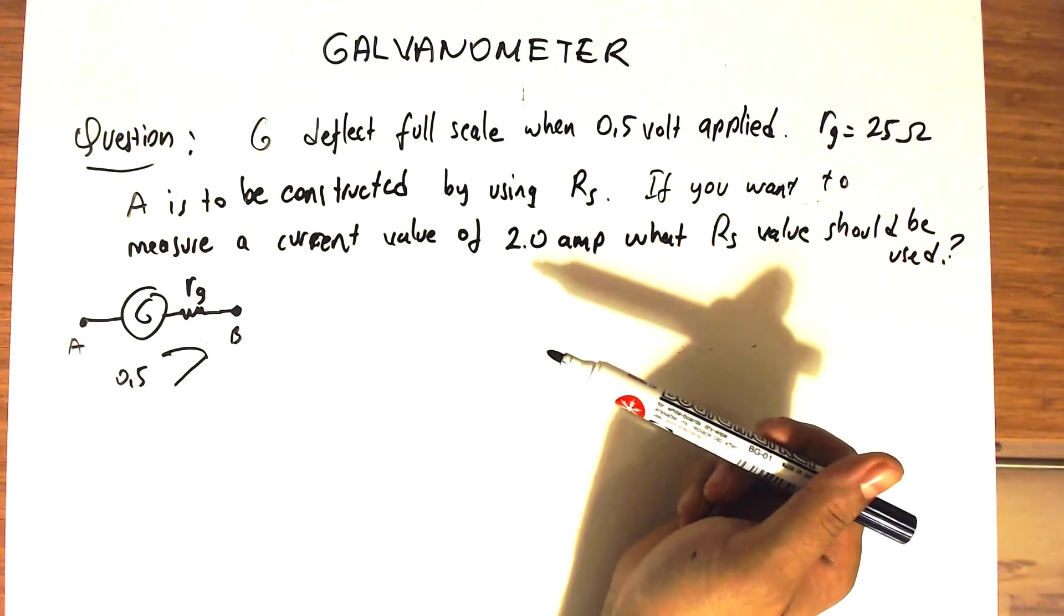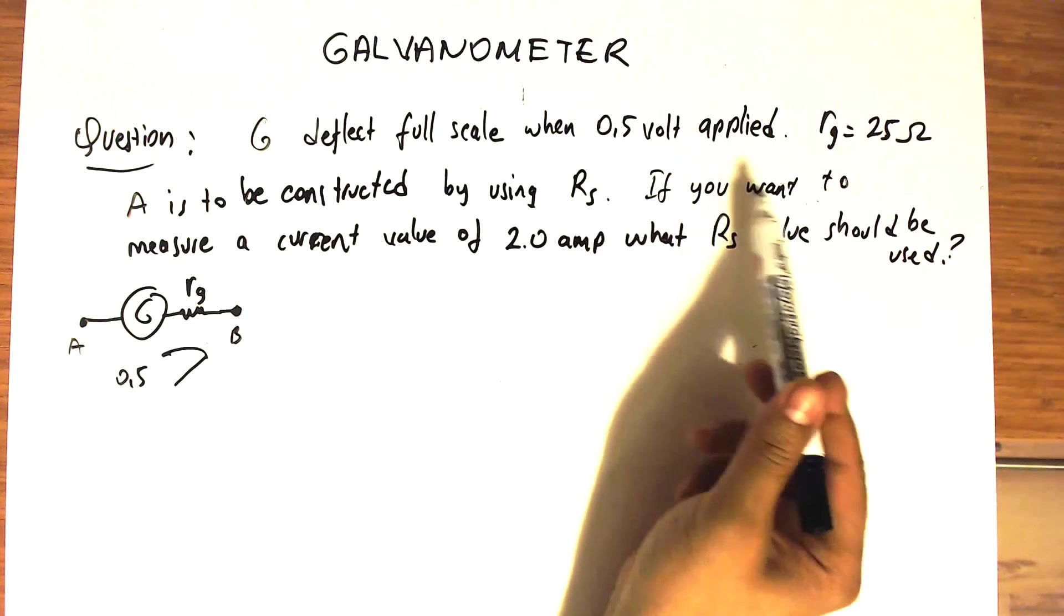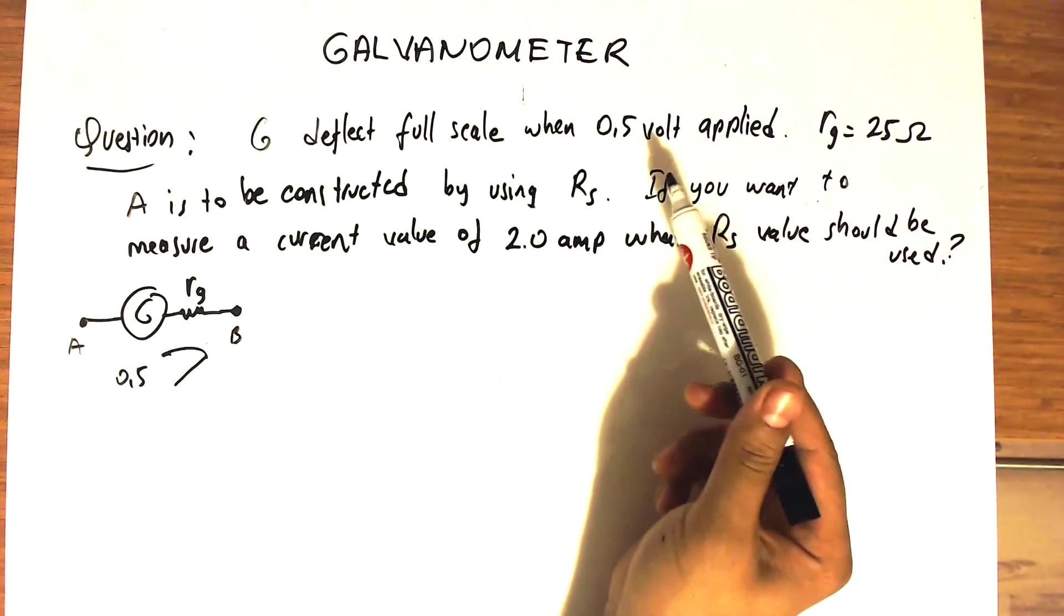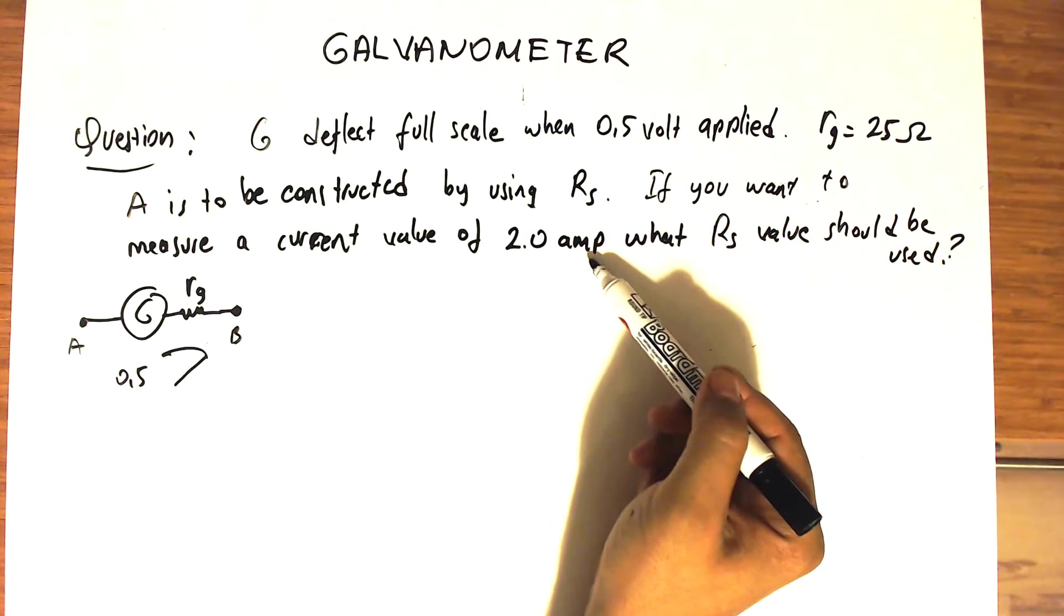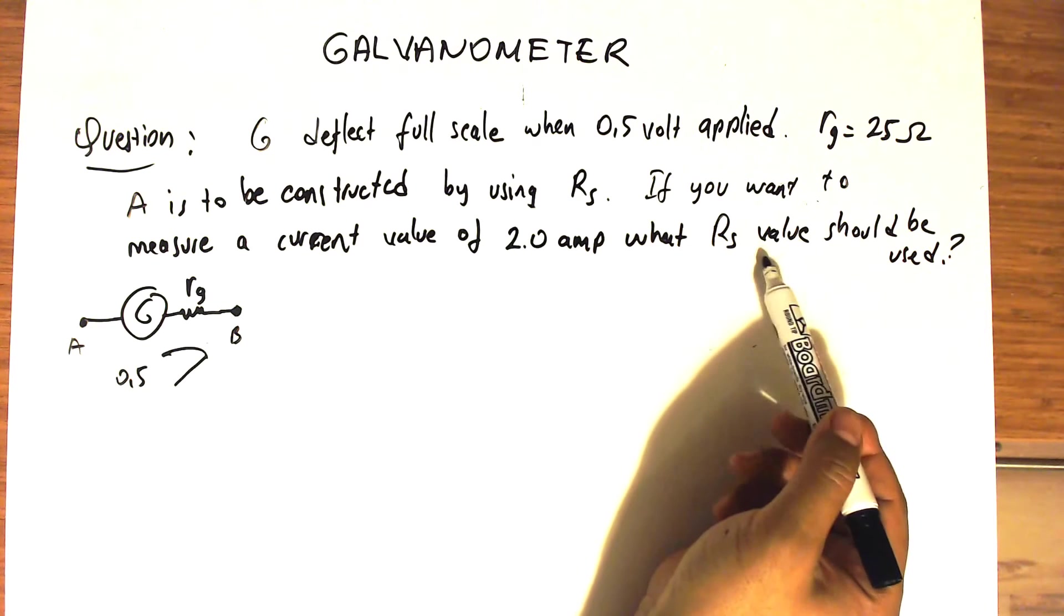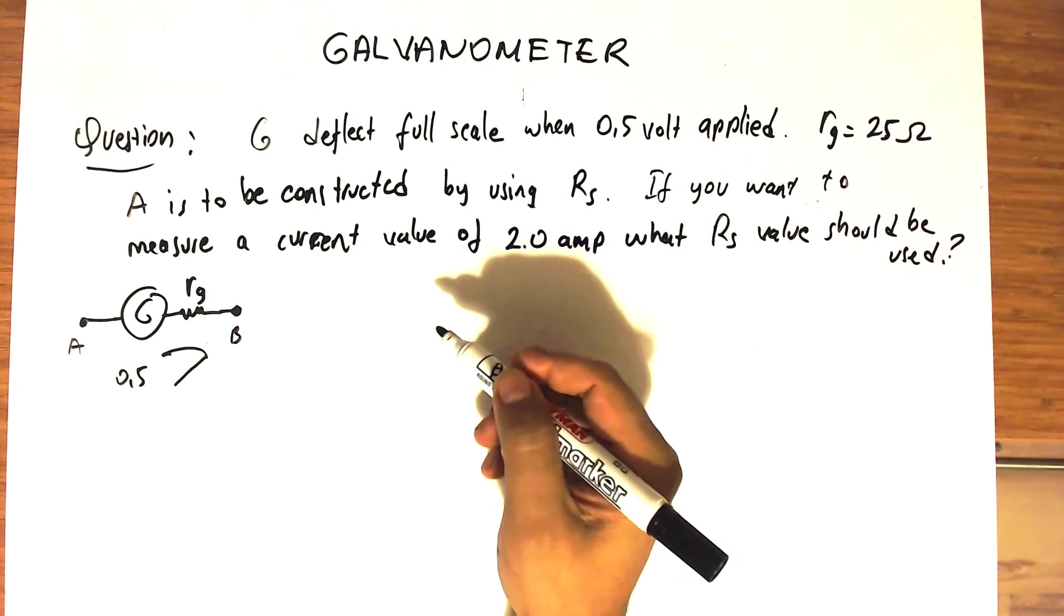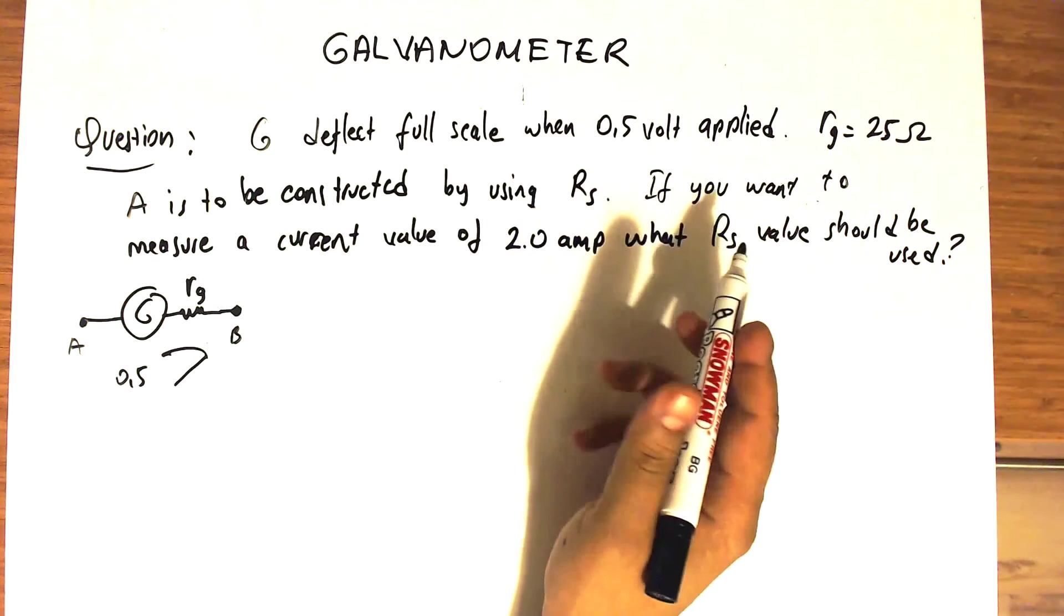If you want to use this galvanometer by using Rs as an amperometer and you want to measure some current values up to two amperes maximum, what Rs shunt resistance value should be used?